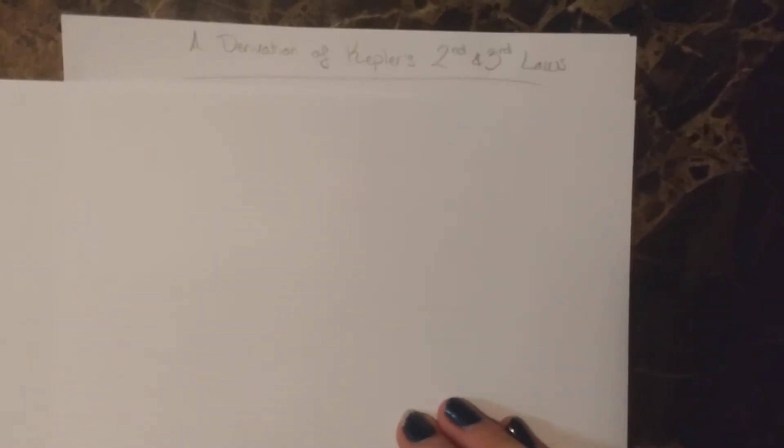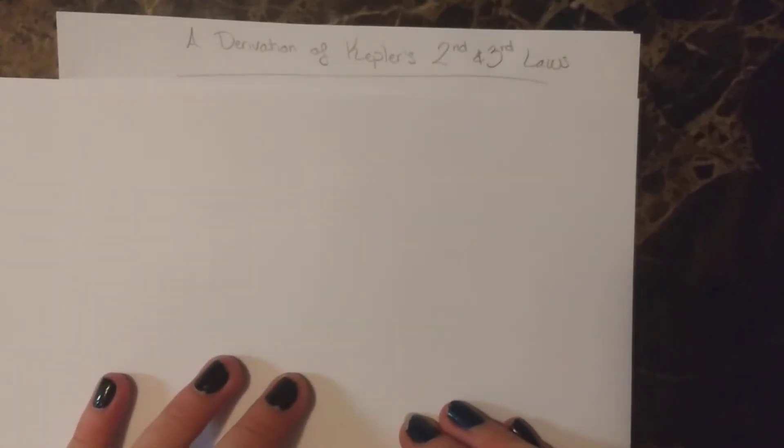My name is Thomas Elliott, and I'm an undergraduate at Humboldt State University. Today I'll be going over a derivation of Kepler's second and third laws.